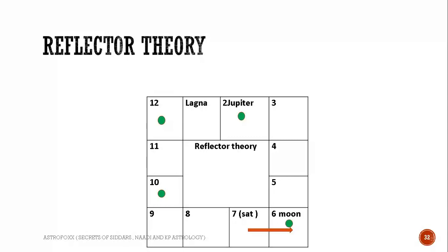Basically, what is the reflector theory? Whenever a retrograde planet has a planet in 12 to 8, the planet in 12 will reflect the characteristics of the retrograde planet. For example, ideally Saturn should not have aspected Taurus, Pisces, and Capricorn, but because it is having a planet in 12, the Moon...